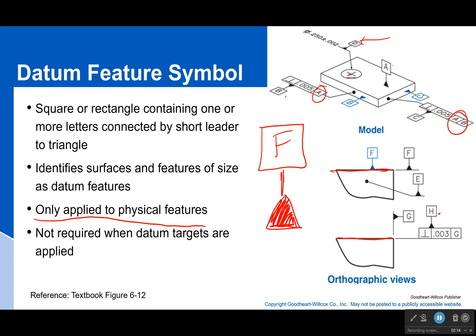But we don't connect a datum feature symbol to an axis ever. So if I say make this cylinder a datum, you would not say okay, well here's my centerline, I'm going to attach it to the centerline. You don't do that. That is wrong. It's always attached to something you can touch. And we're going to learn about datum targets a little bit later, and we wouldn't need these datum feature symbols if we were doing datum targets.